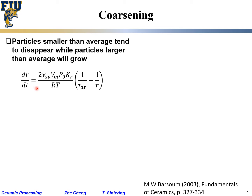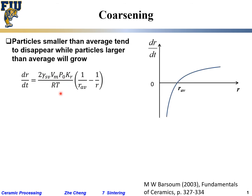Here, r is the radius of your particle and r_av means average particle radius. The term r_t, v_m, p_0, and k_r are typical constants. If you plot it qualitatively, you get a curve where (1 - 1/r) flips the curve upward. Essentially, if your radius equals the average radius, the whole term becomes zero, which means the particle size does not change with time.